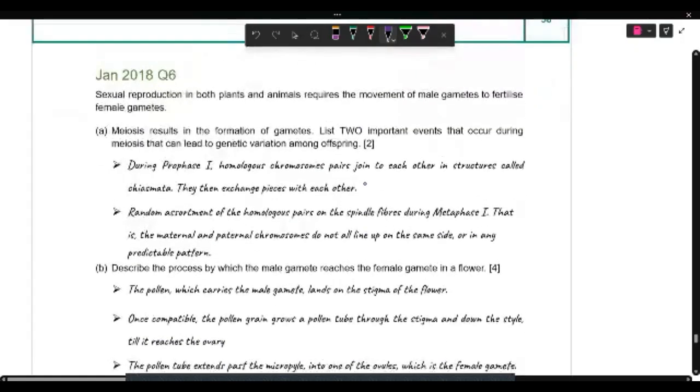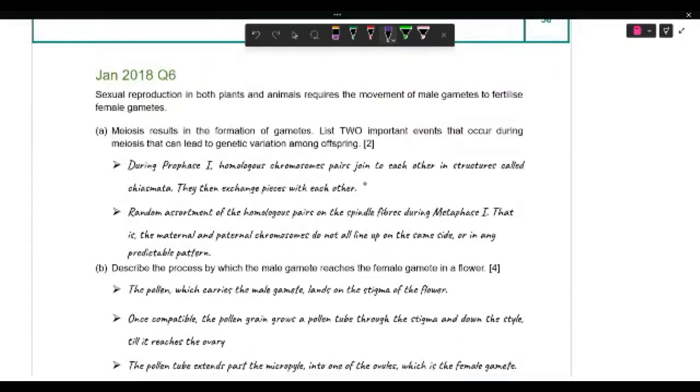So to answer question six, looking at subsection reproduction. And they're telling us, okay, we're looking at movement of male gametes. Yes, that is true. When you think about it, for both plants and animals, the onus is on the male gamete to move towards the female gamete in order to fertilize it.